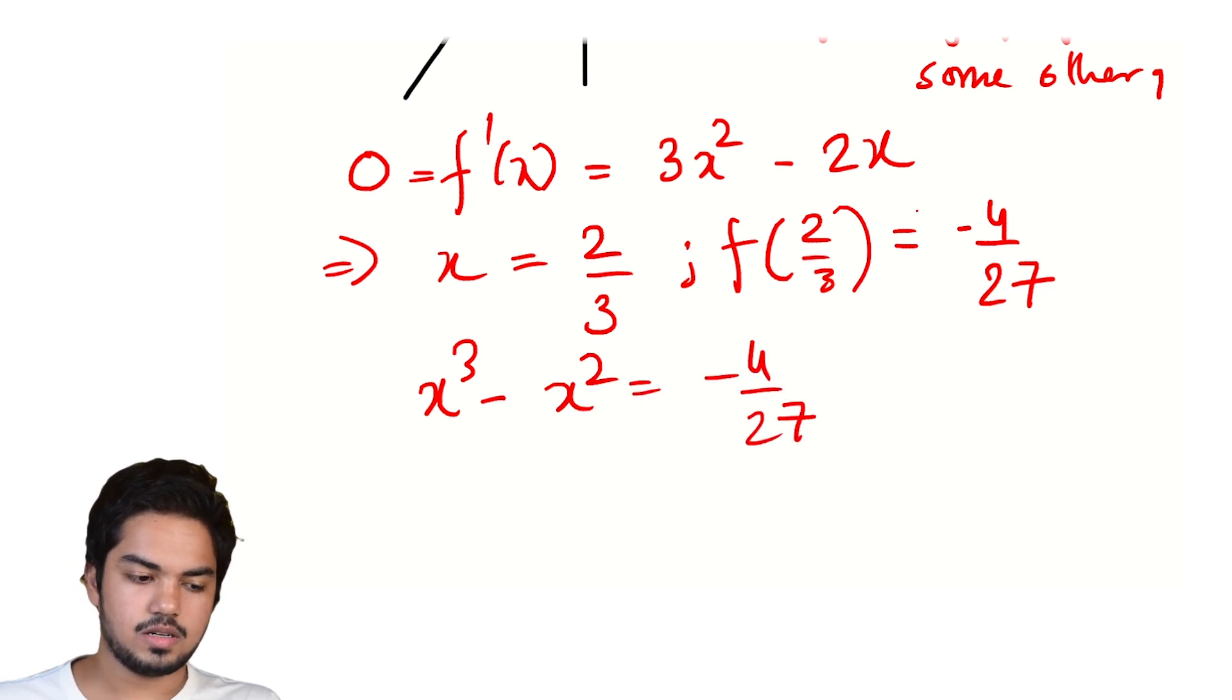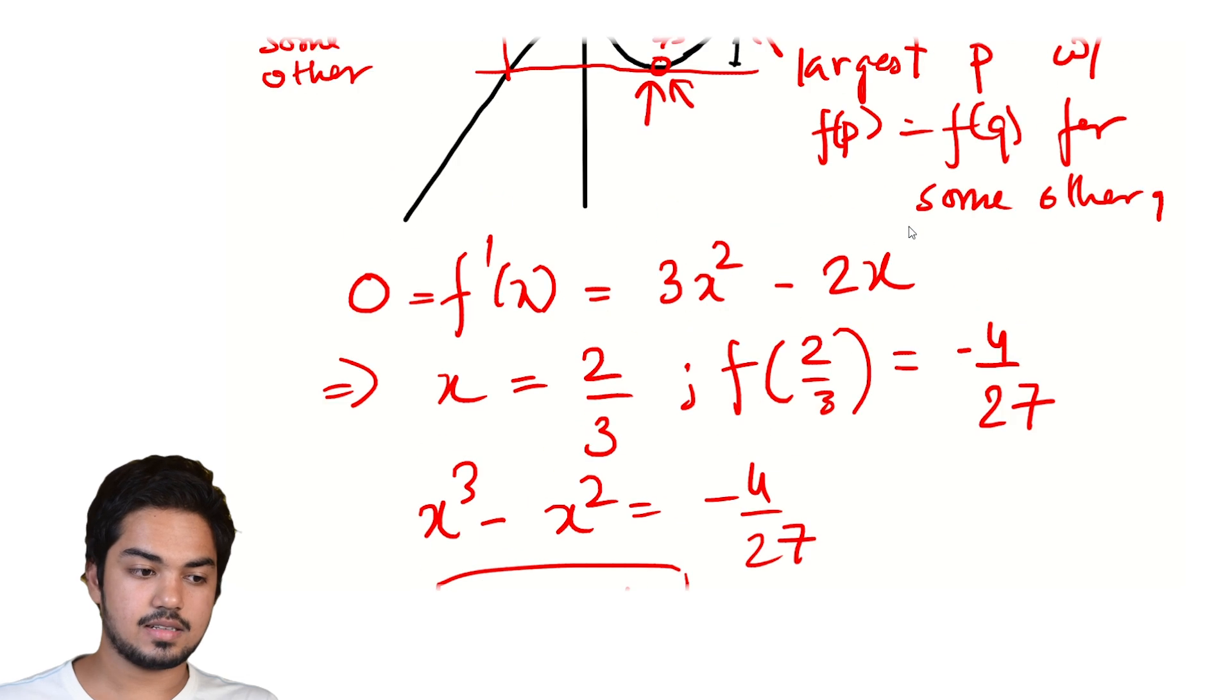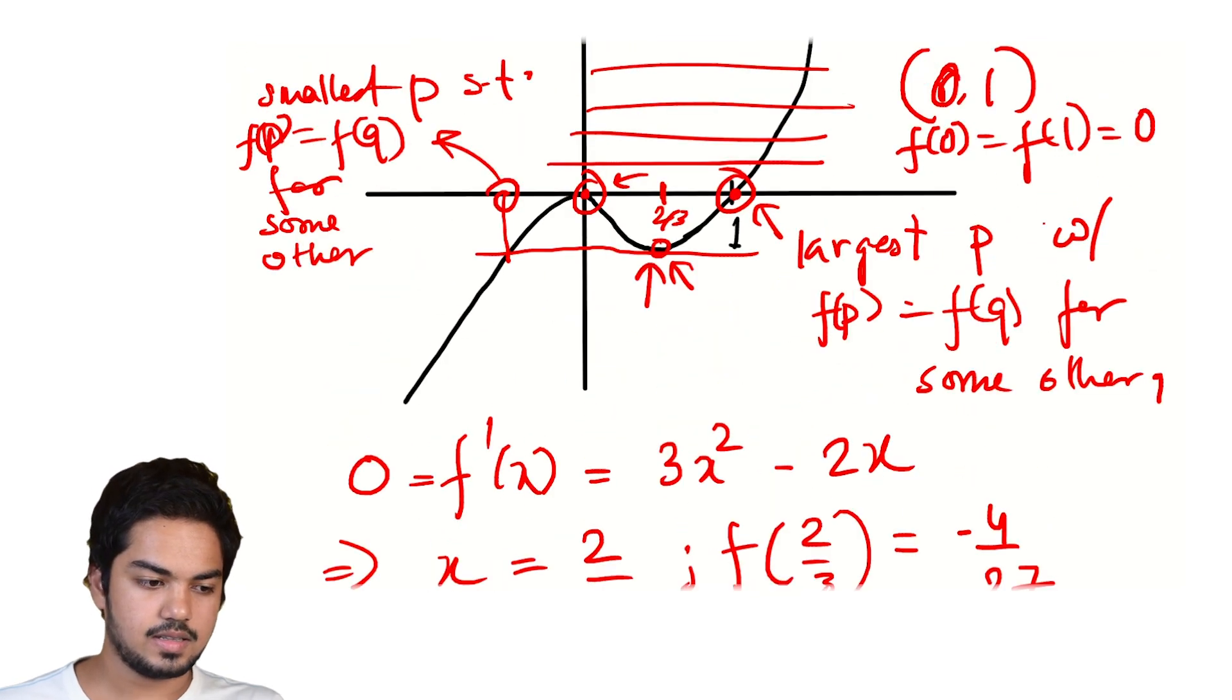So we're looking for the other point with value -4/27. It's not very hard to see. Essentially what we're trying to solve for is that x³ - x² = -4/27. And this is not particularly hard to solve. You can also guess your way into this. The value of x, the other value of x for this, for which this happens is x = -1/3.